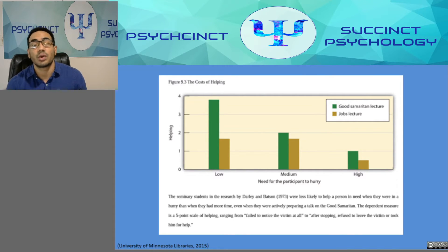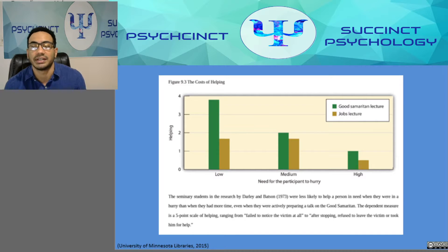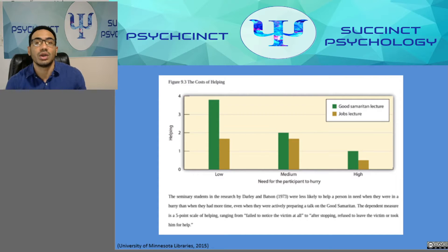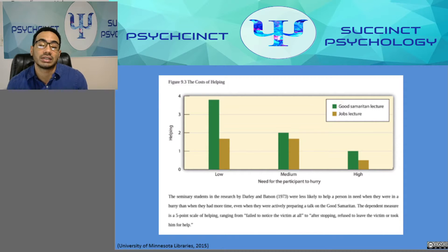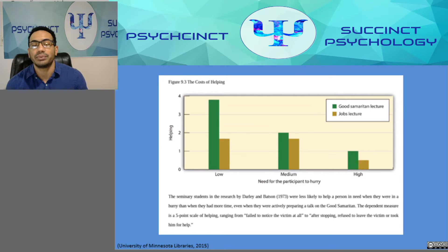Darley and Batson in 1973 demonstrated the effect of the cost of helping. They asked seminary students to prepare a speech — half prepared a talk on the parable of the Good Samaritan, the other half on jobs seminarians enjoy most. After preparing, students were asked to walk to a nearby building where their speech would be recorded. Some were told they had plenty of time, some were right on time, and some were told they were running late. On the way, all students passed a confederate slumped in a doorway, coughing and groaning and clearly in need of help.